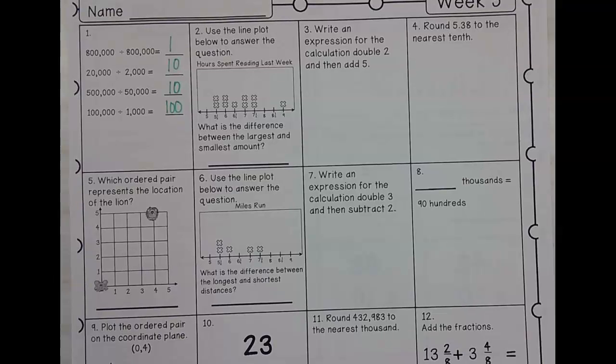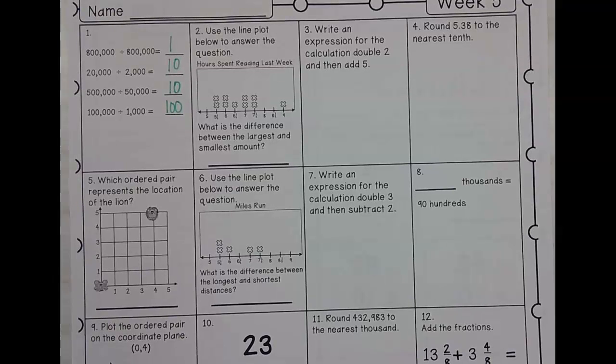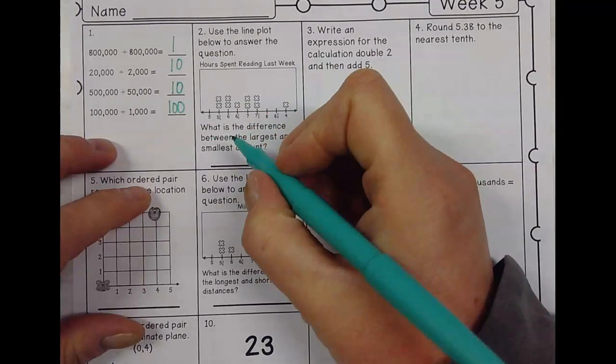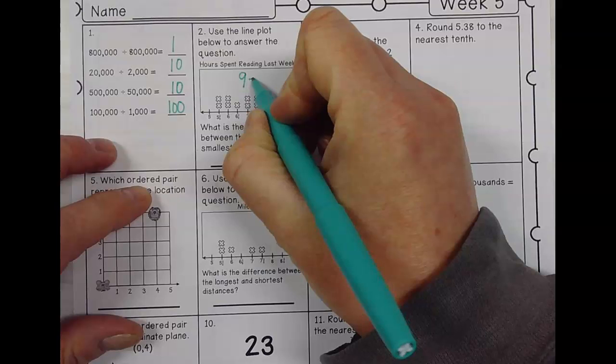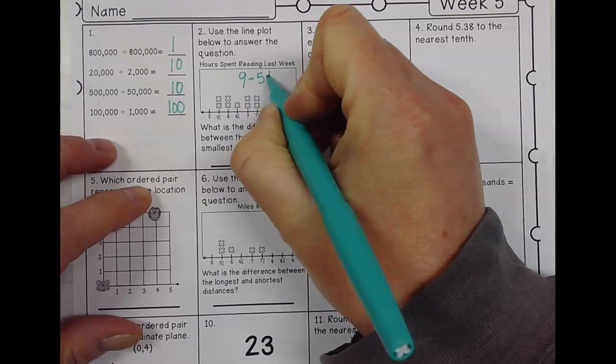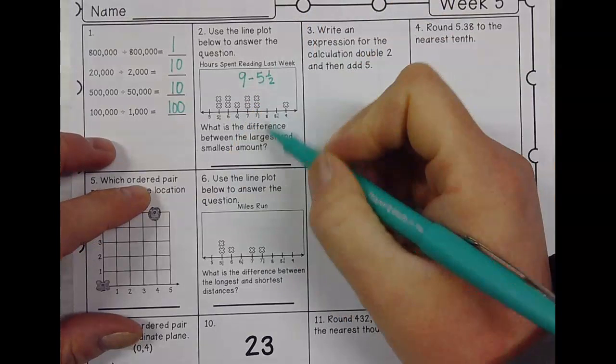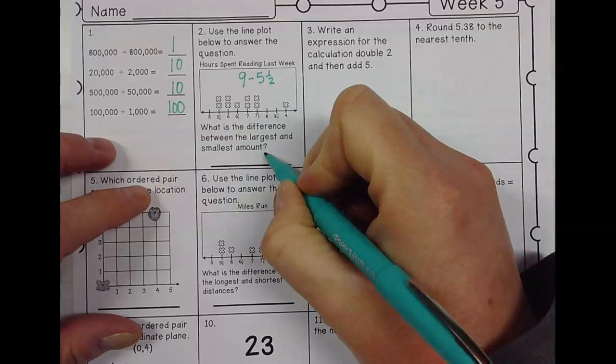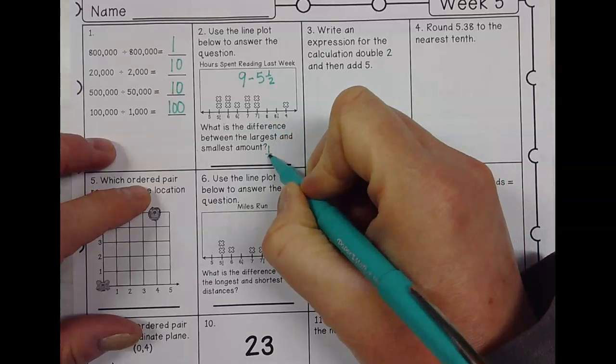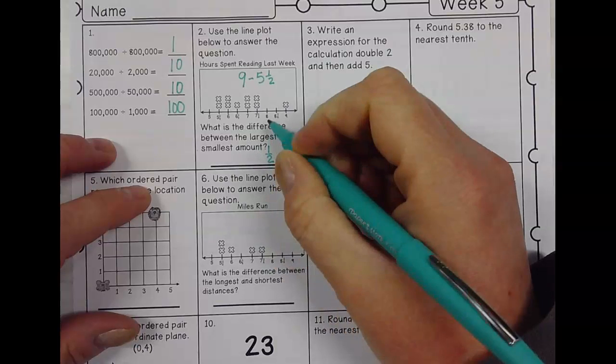Well, the largest amount is nine, and the smallest amount is five and a half. Well, nine minus five and a half... five and then three.